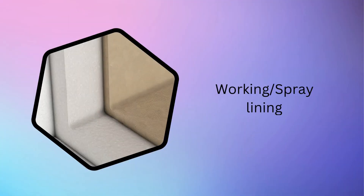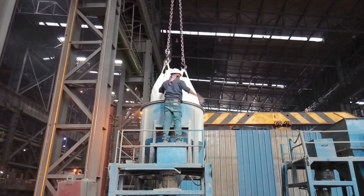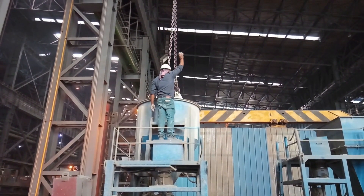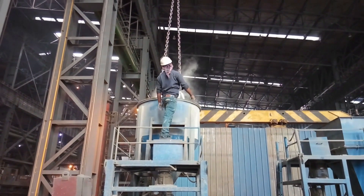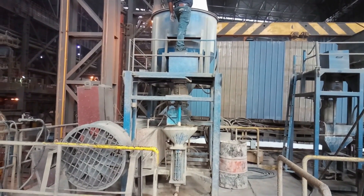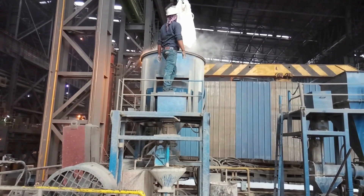Now comes the working lining. The tundish working lining is of two types: one is lining with spray mask, and another is lining with dry setting powder. Here we are going to discuss spray mask lining. Spray mask is a magnesium-based sprayable mass of grain size 0 to 1 mm. It is used in working lining because it is easy to apply, cost effective, and easy to remove after use.